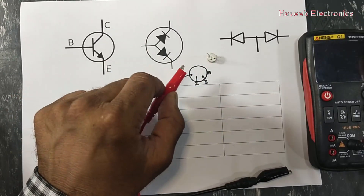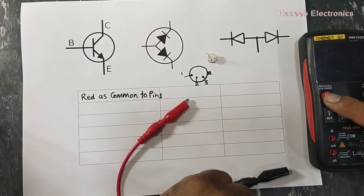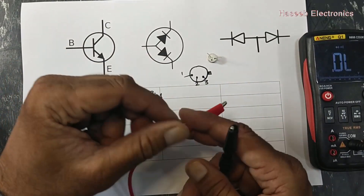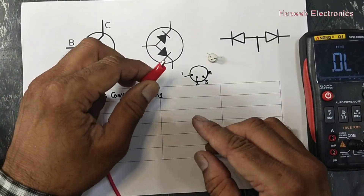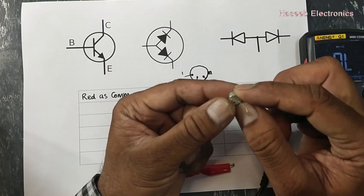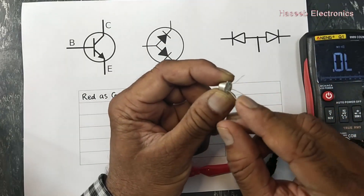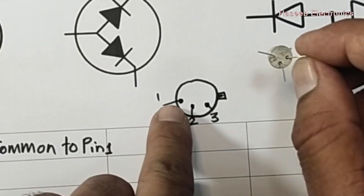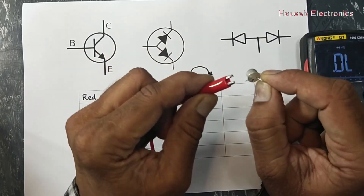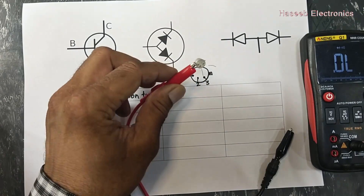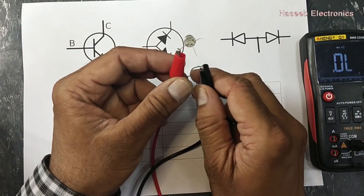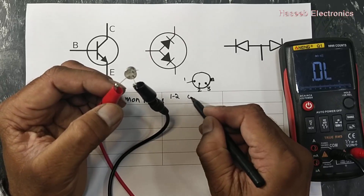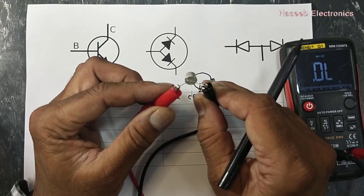Let's start to test a transistor. Set to diode mode. We will follow the same procedure as before. I have this transistor. We will select any one wire as pin number one. As I discussed, here we have the index pin. We will select this pin — pin 1, 2, 3. Select red lead as common and connect to pin number one. Now take continuity between pin 1 and 2 — it is open circuit. Check pin 1 and 3 — open.